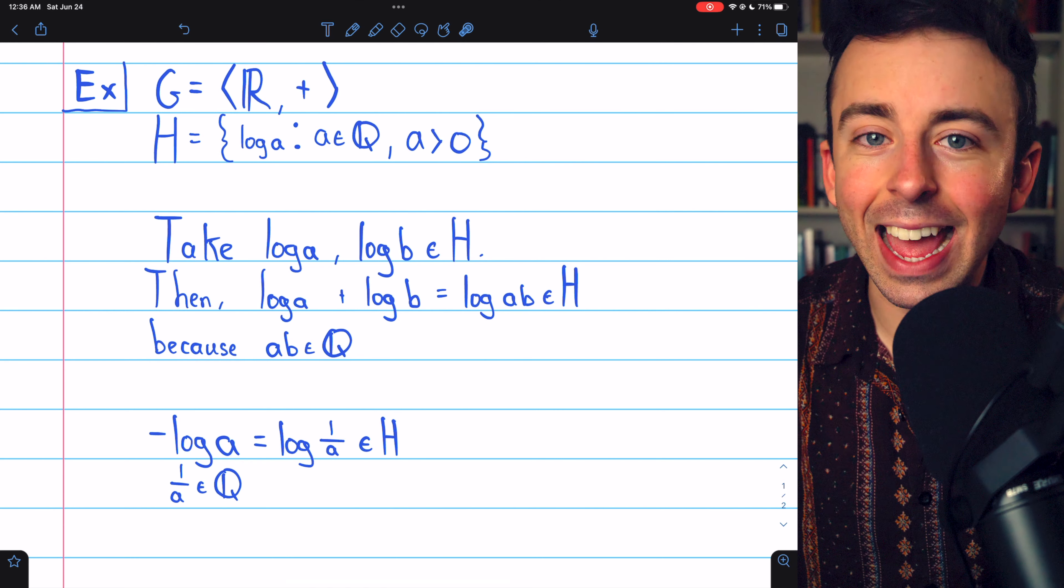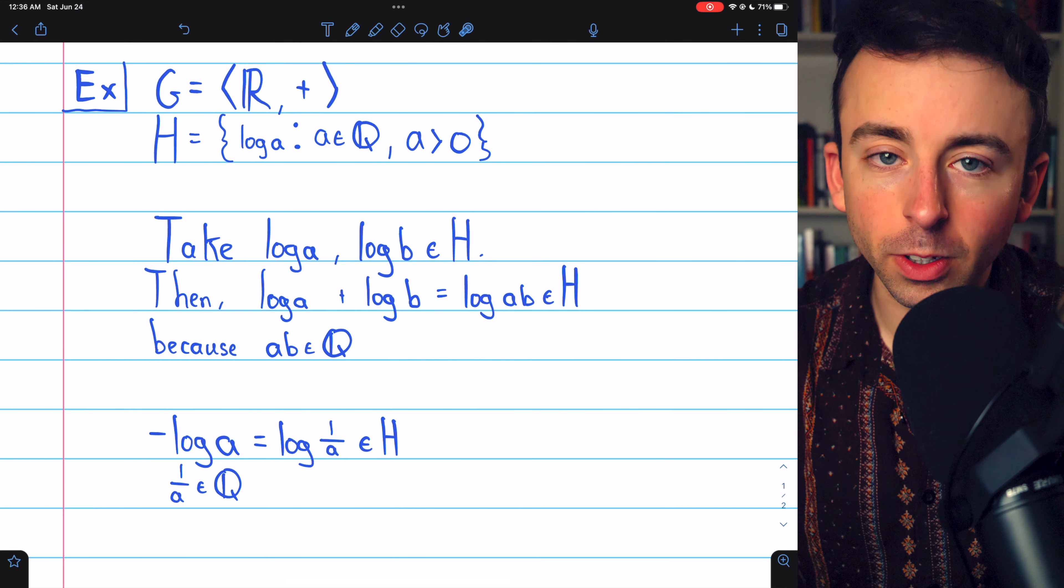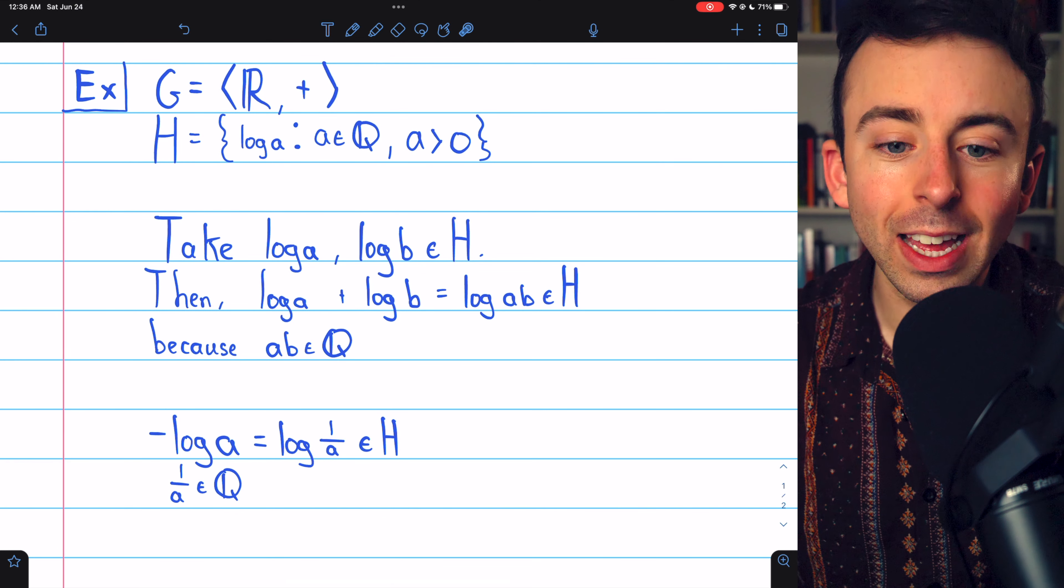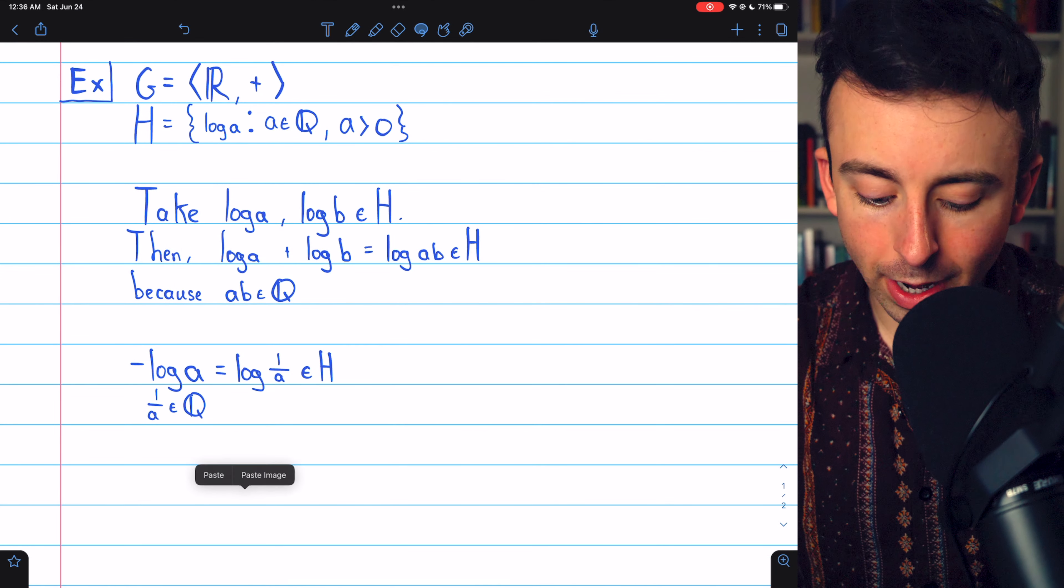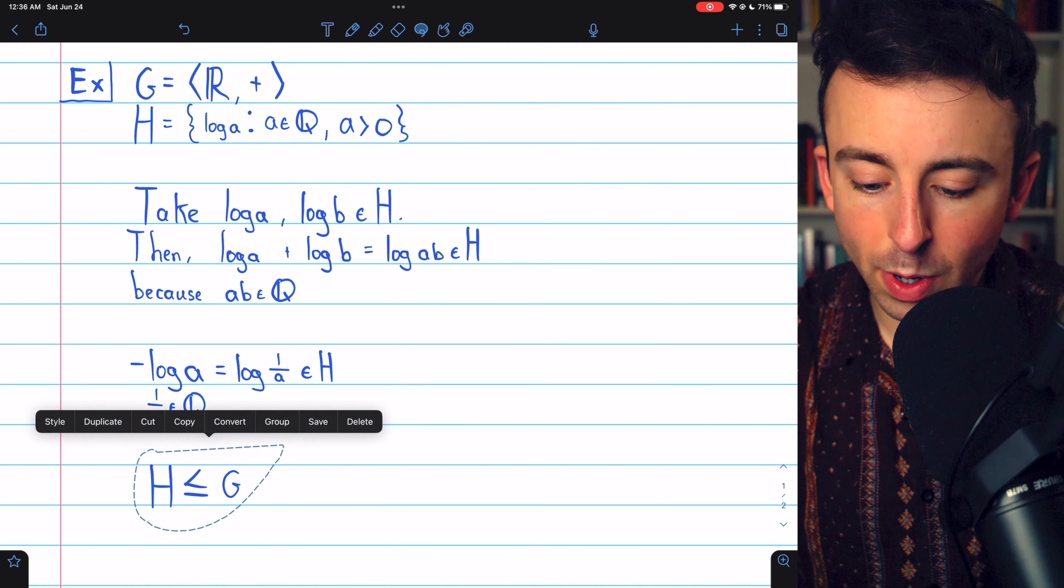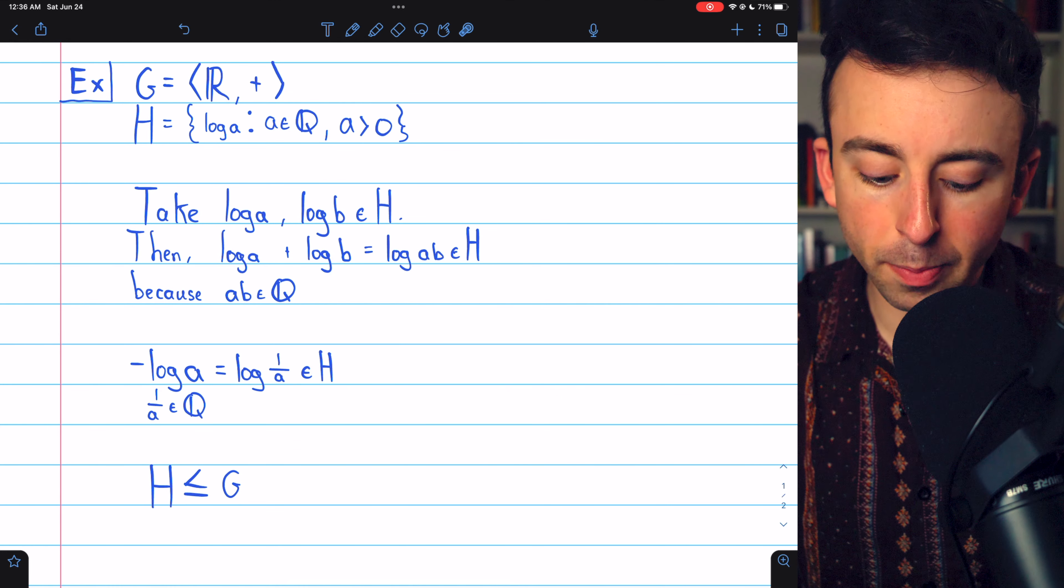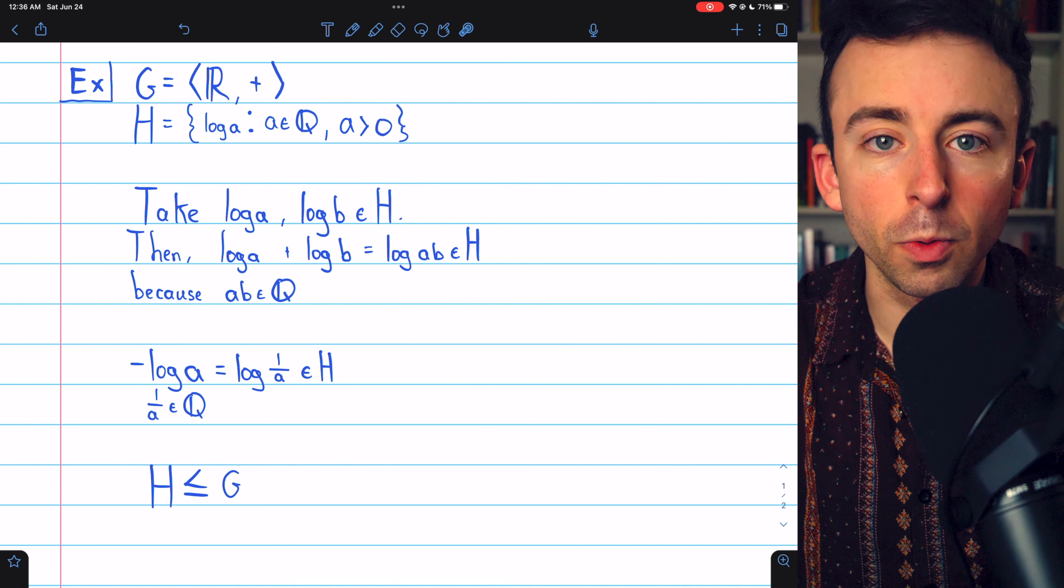which is definitely in H because the reciprocal of a positive rational is a positive rational. Since H is closed under the operation and is closed with respect to inverses, by the two-step subgroup test, H is a subgroup of G.